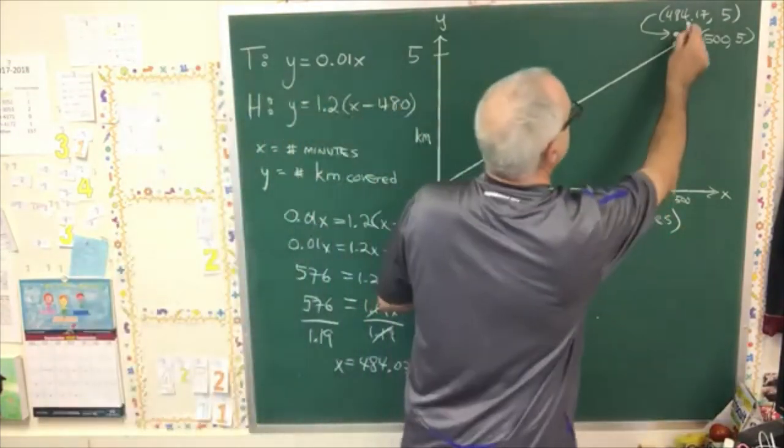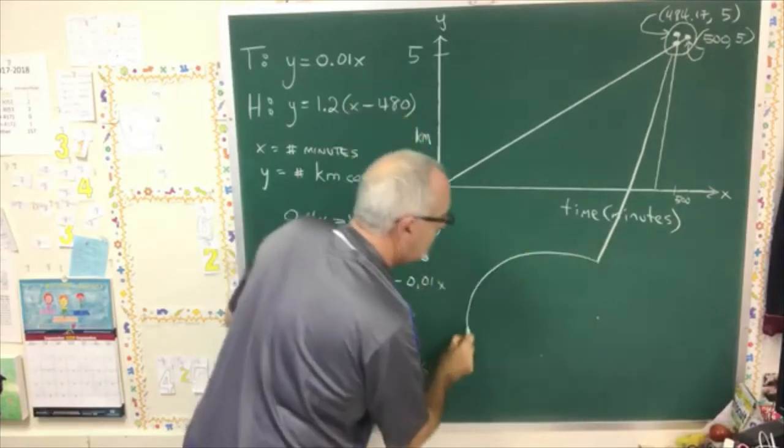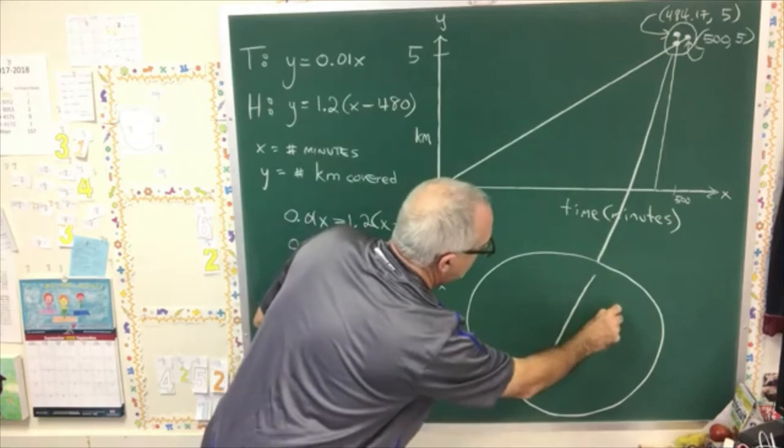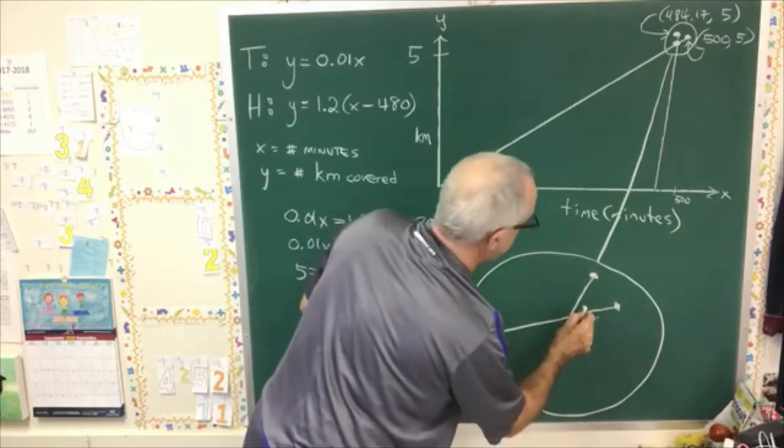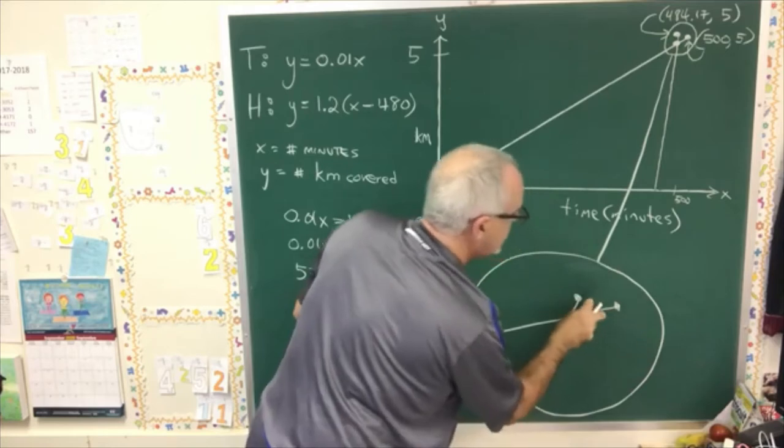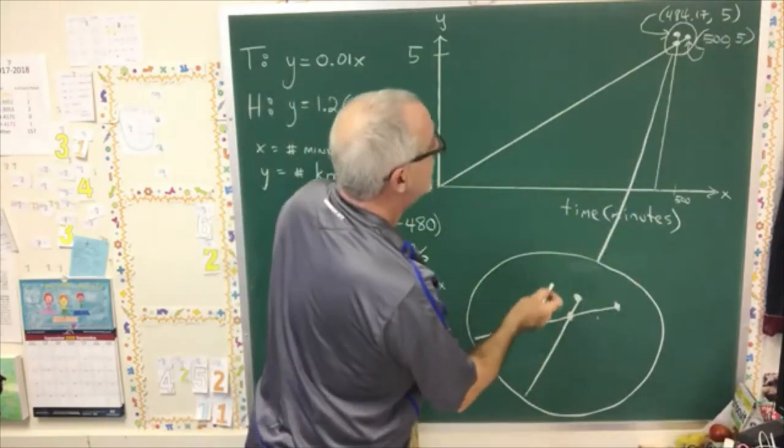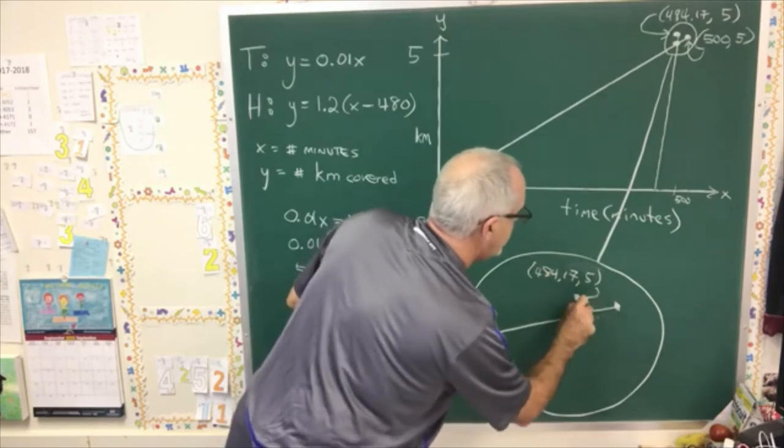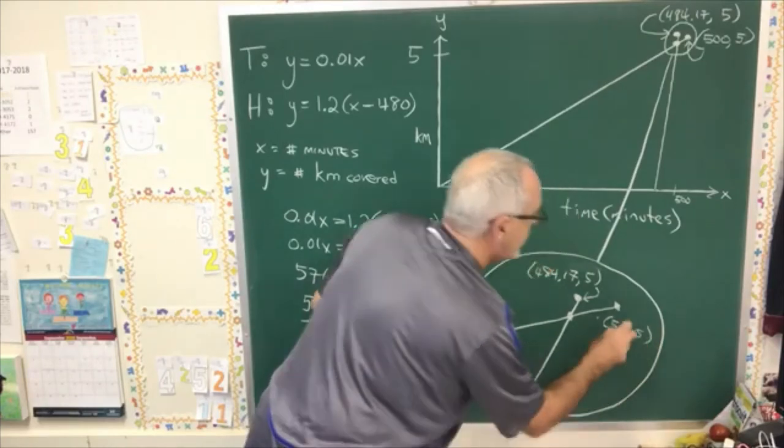Another thing I can do is I can do an expansion of this part of the graph. And it'll look something like this. That's not very good. Let's make this one a little lower. Because, of course, both of these things are happening when y is equal to 5. So they're equal in height above the x-axis. So, we have 484.17, 5 for the hare's finish right here. And we have 500, 5 for the tortoise's finish over there.